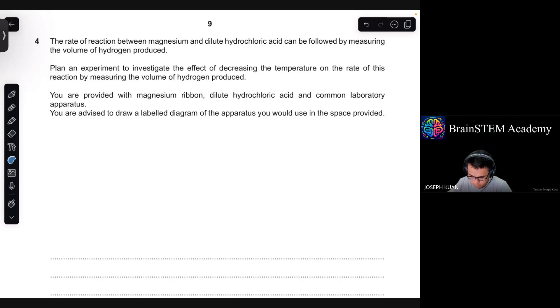Question number 4. The rate of reaction between magnesium and dilute hydrochloric acid can be followed by measuring the volume of hydrogen produced. Plan an experiment to investigate the effect of decreasing the temperature on the rate of this reaction by measuring the volume of hydrogen produced. You are provided with magnesium ribbon, dilute hydrochloric acid and common laboratory apparatus. You are advised to draw a labelled diagram of the apparatus you would use in the space provided.